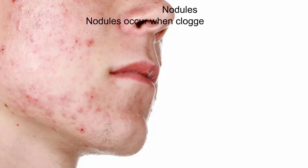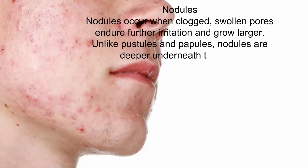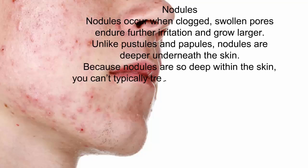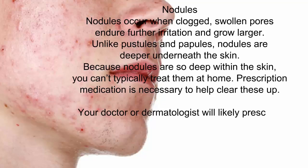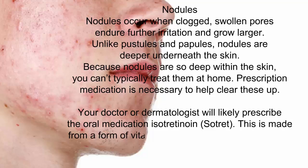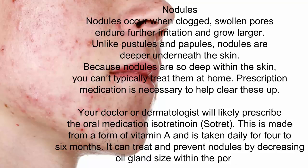Nodules occur when clogged, swollen pores endure further irritation and grow larger. Unlike pustules and papules, nodules are deeper underneath the skin. Because nodules are so deep within the skin, you can't typically treat them at home — prescription medication is necessary. Your doctor or dermatologist will likely prescribe the oral medication isotretinoin, which is made from a form of vitamin A and is taken daily for 4 to 6 months. It can treat and prevent nodules by decreasing oil gland size within the pores.